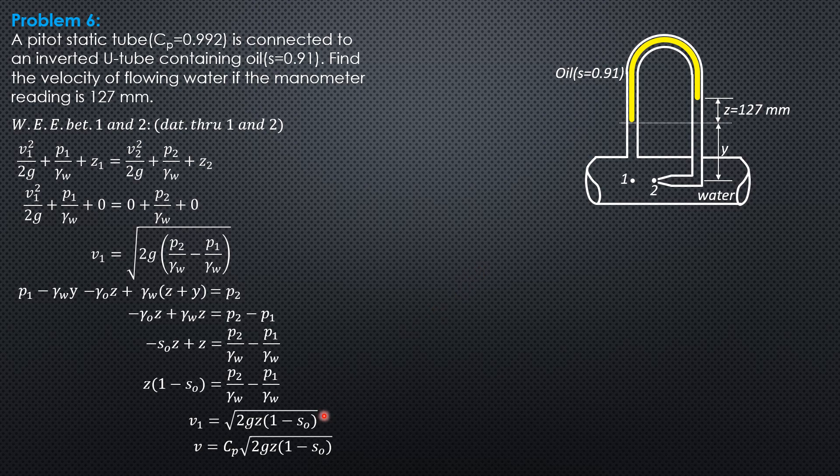Substitute all these values. So v is 0.992 times square root of 19.62 times 0.127 times (1 minus 0.91). Therefore, v is 0.4698 meters per second. That's it.